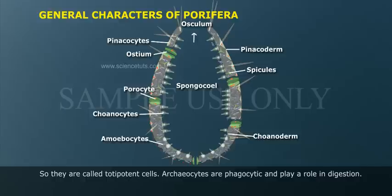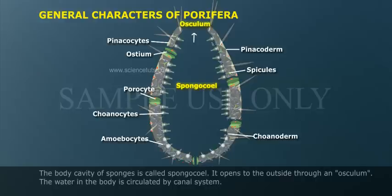Archaeocytes can change into any type of cell, so they are called totipotent cells. Archaeocytes are phagocytic and play a role in digestion. The body cavity of sponges is called the spongocoel, which opens to the outside through an osculum.